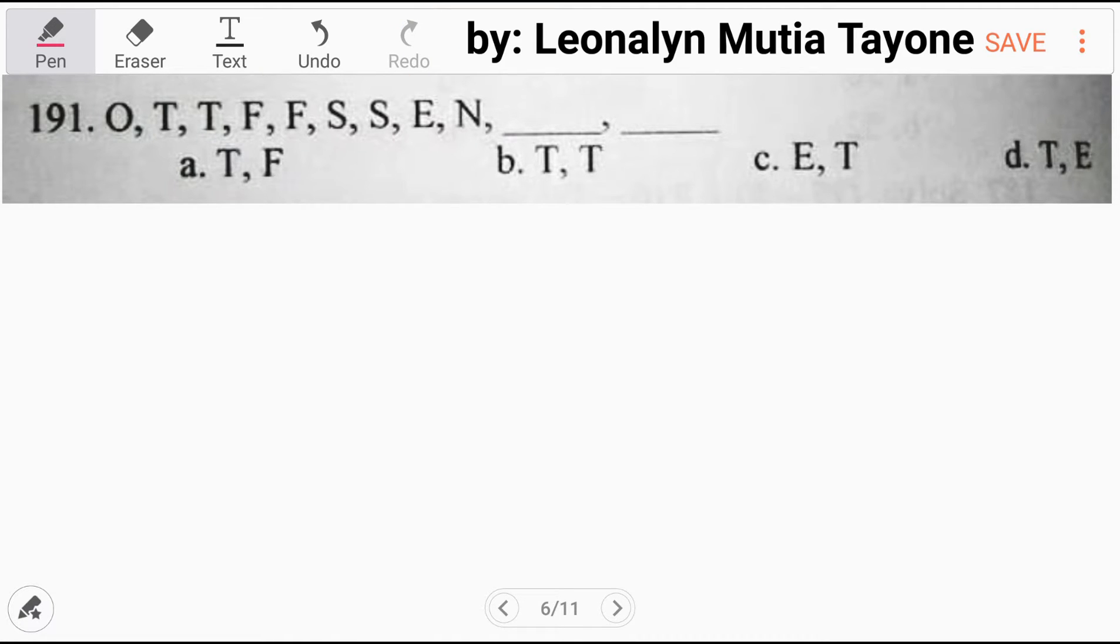Please comment your answer and we will see if you're correct. What we have here is O, T, T and another F, wait... F, then S, S, E, N. What are the next two letters? Because the choices have two letters.